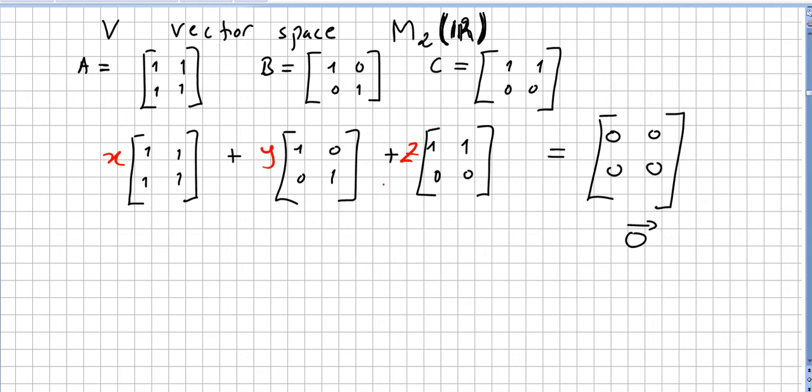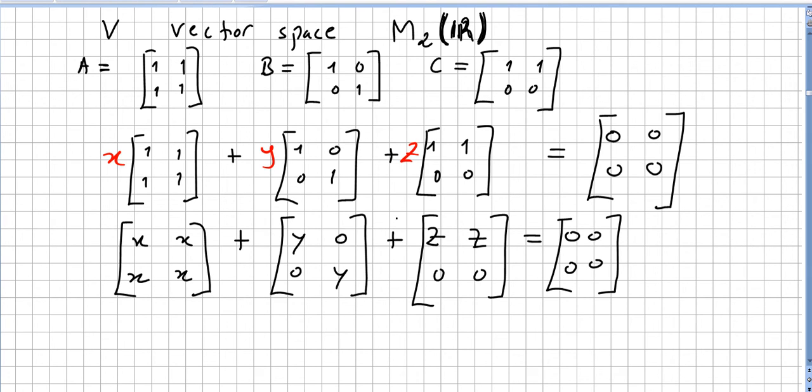And now we simply do the calculations. So the first one will be x, x, x, x, right? Because we are multiplying a matrix by a scalar. y, 0, 0, y. z, z, 0, 0. And this has to be equal to 0 0 0 0.